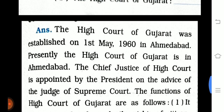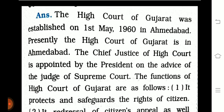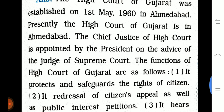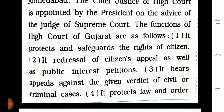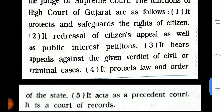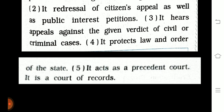Question 7, part 5: High Court of Gujarat. The High Court of Gujarat was established on 1st May 1960 in Ahmedabad. The Chief Justice is appointed by the president on the advice of the judges of the Supreme Court. The functions of the High Court include: protecting and safeguarding the rights of citizens, hearing citizens' appeals and public interest petitions, hearing appeals against verdicts in civil or criminal cases, protecting the law and order of the state, and acting as a court of record.